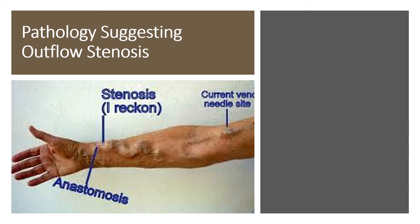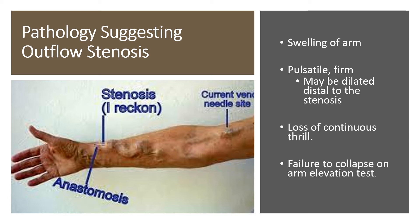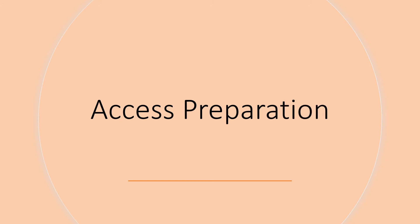To review the findings suggestive of fistula stenosis: you might see swelling of the arm; the fistula may be pulsatile and firm; it may be dilated just distal to the anastomosis; you may lose the continuous thrill, particularly the diastolic component; and the fistula may not collapse on the arm elevation test. If you see any of these findings, think stenosis. After examining the access, it is time to prepare for cannulation by cleaning with an antiseptic solution.